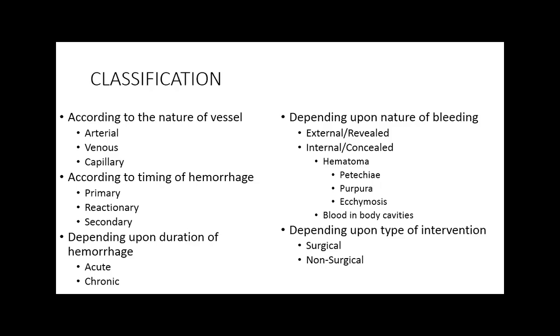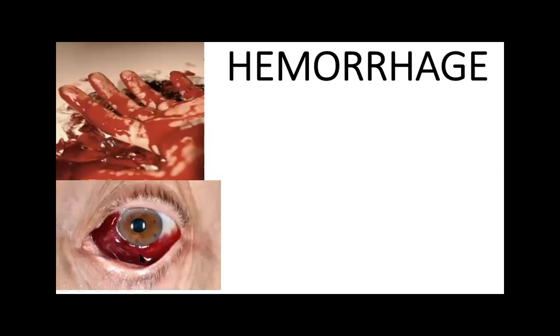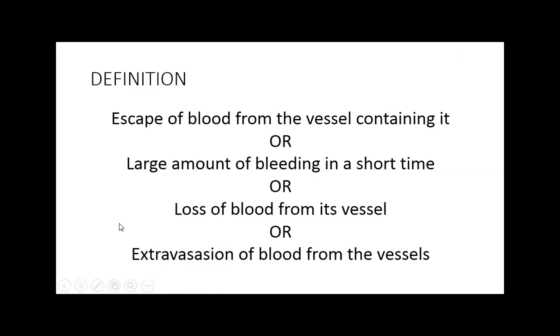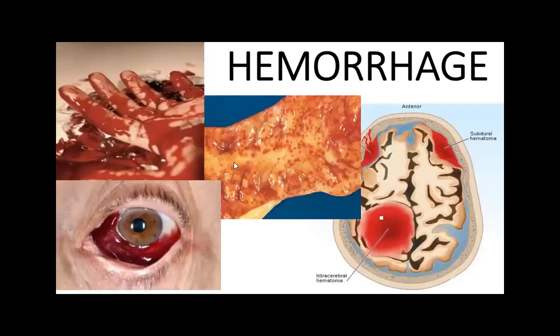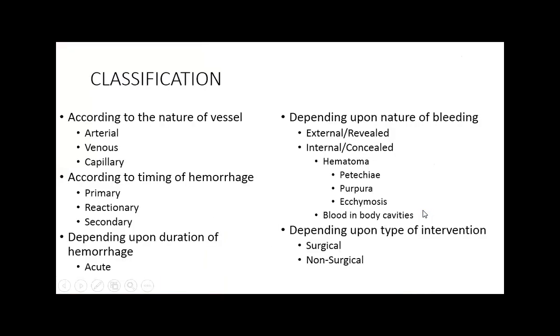Pools of internally collected blood are known as hematomas. Looking at the picture, this is a hematoma — the collection of blood between the tissues. There are different types of body tissues involved. This is internal concealed bleeding, and it is known as a hematoma.